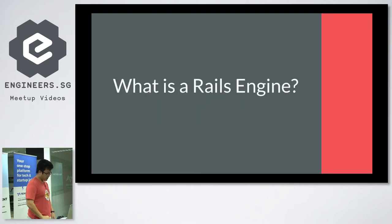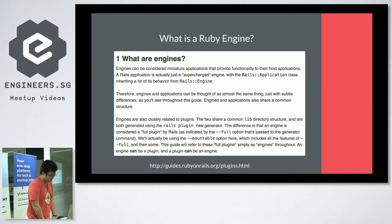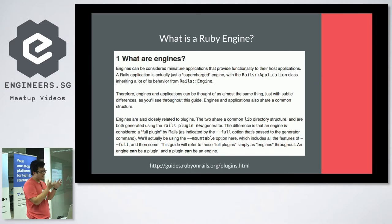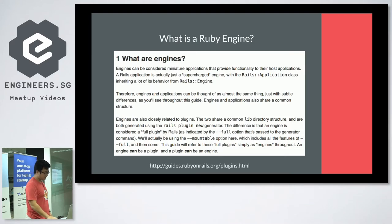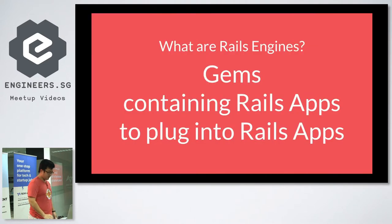A Rails engine, according to the Rails guides page, is a type of Rails plugin in that you create it the same way, but actually it's a mini Rails app. You run the `rails plugin new` command but pass in the `--full` or `--mountable` option, and in this way you create a new Rails engine. It's also a gem, so if you publish this gem, you can include it in your other Rails apps and have this Rails app inside your Rails app. In sum, a Rails engine is a gem that contains a Rails app that you can plug into another Rails app — which is exactly what Devise is.